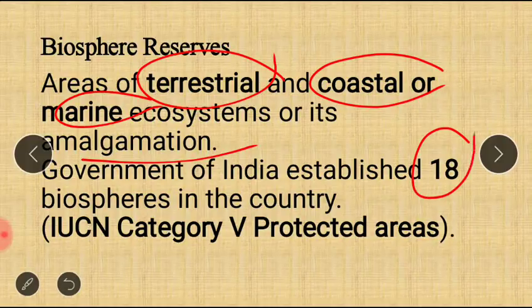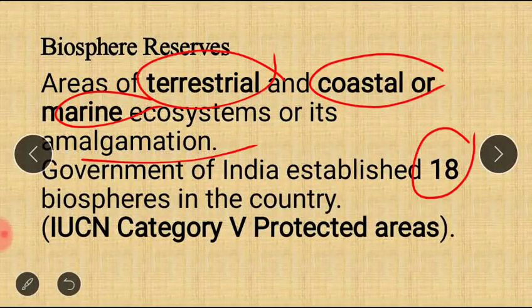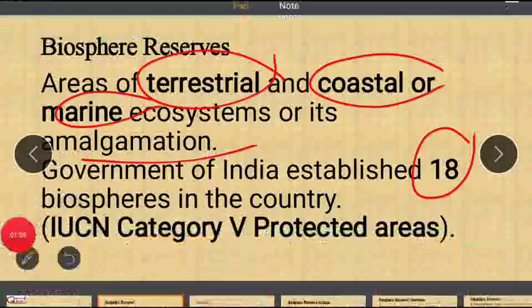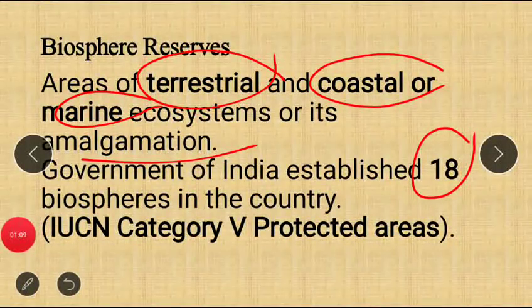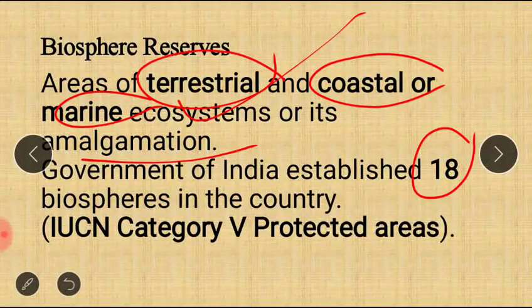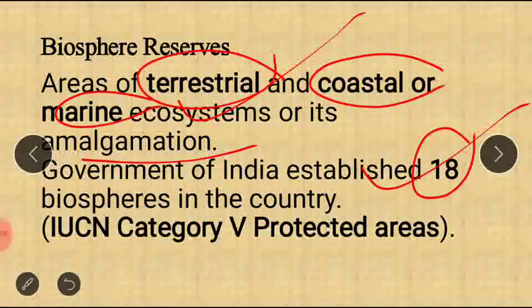The Government of India has established 18 Biosphere Reserves. These Biosphere Reserves correspond more or less to the IUCN Category 5 protected areas. IUCN stands for International Union for Conservation of Nature and Natural Resources.